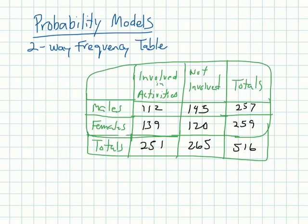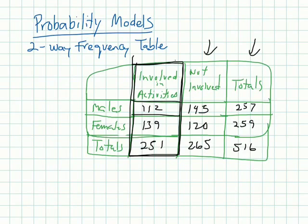Now, since I said that we're given that they're involved in an activity, I'm only looking at this total now. I'm only looking at this column. So I said, given that they're involved in an activity, I'm not including this or this. And then that they're male is going to be 112. So now we have 112 out of the total in that column, which is 251. And if we divide that, we get approximately 0.4462, which is approximately 44.62%.